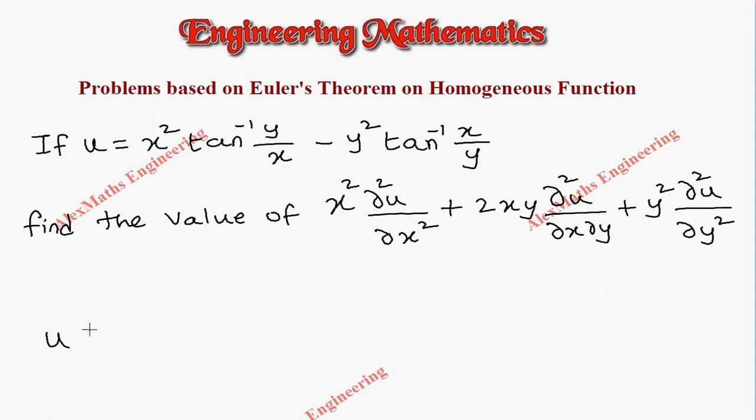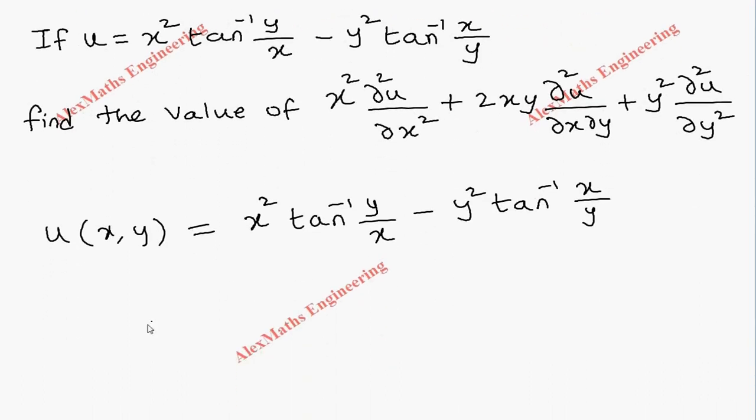Now let's take the function u as u of x comma y, because it is in terms of x and y. To check whether it is a homogeneous function or not, we have to replace x as tx and y as ty.